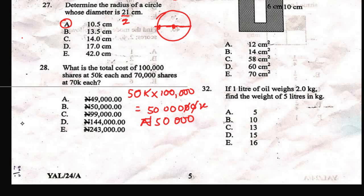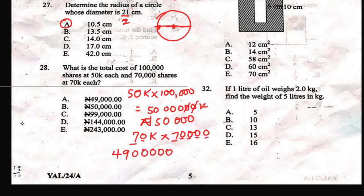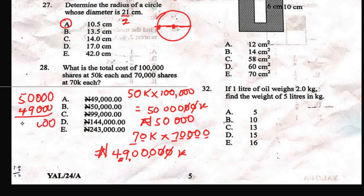Then, 70,000 shares at 70 kobo each would be 70 kobo times 70,000. 7 times 7 is 49, bringing out the five zeros gives 4,900,000 kobo. Cancel out two zeros to convert to naira: 49,000 naira. The total will be 50,000 for the first batch plus 49,000 for the second, giving us 99,000 naira, which is option C.